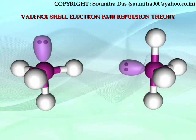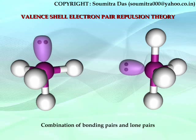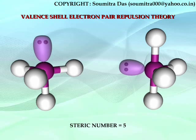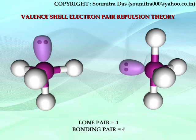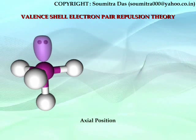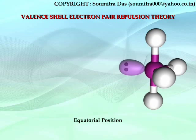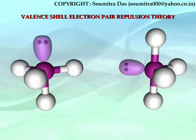Now we will try to understand the layout of electron pairs where the central atom has a combination of both bonding and lone pairs. Let the steric number be 5, with one lone pair and 4 bonding pairs. The question arises: which position will the lone pair occupy — the axial position or the equatorial position? Since a lone pair is a stronger repeller, it will try to occupy a position from where it is repelled the least, so that it can repel the most.